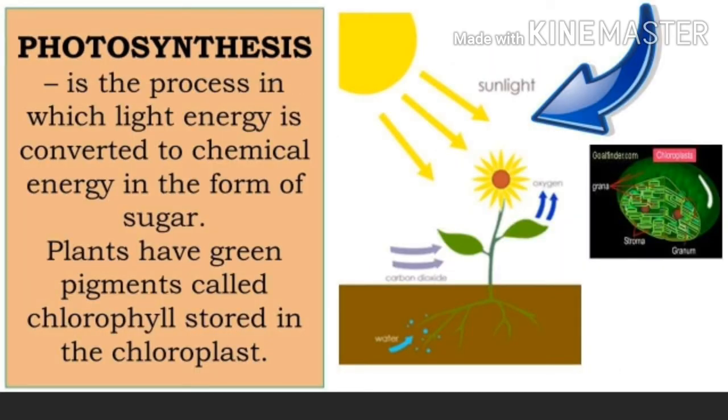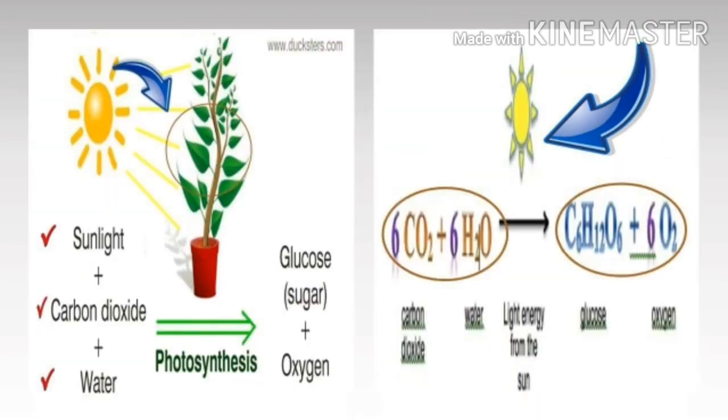Plants have green pigments called chlorophyll that is stored in the chloroplast. This pigment aids in capturing the light energy from the sun that enables plants to change it into chemical energy stored in the food.